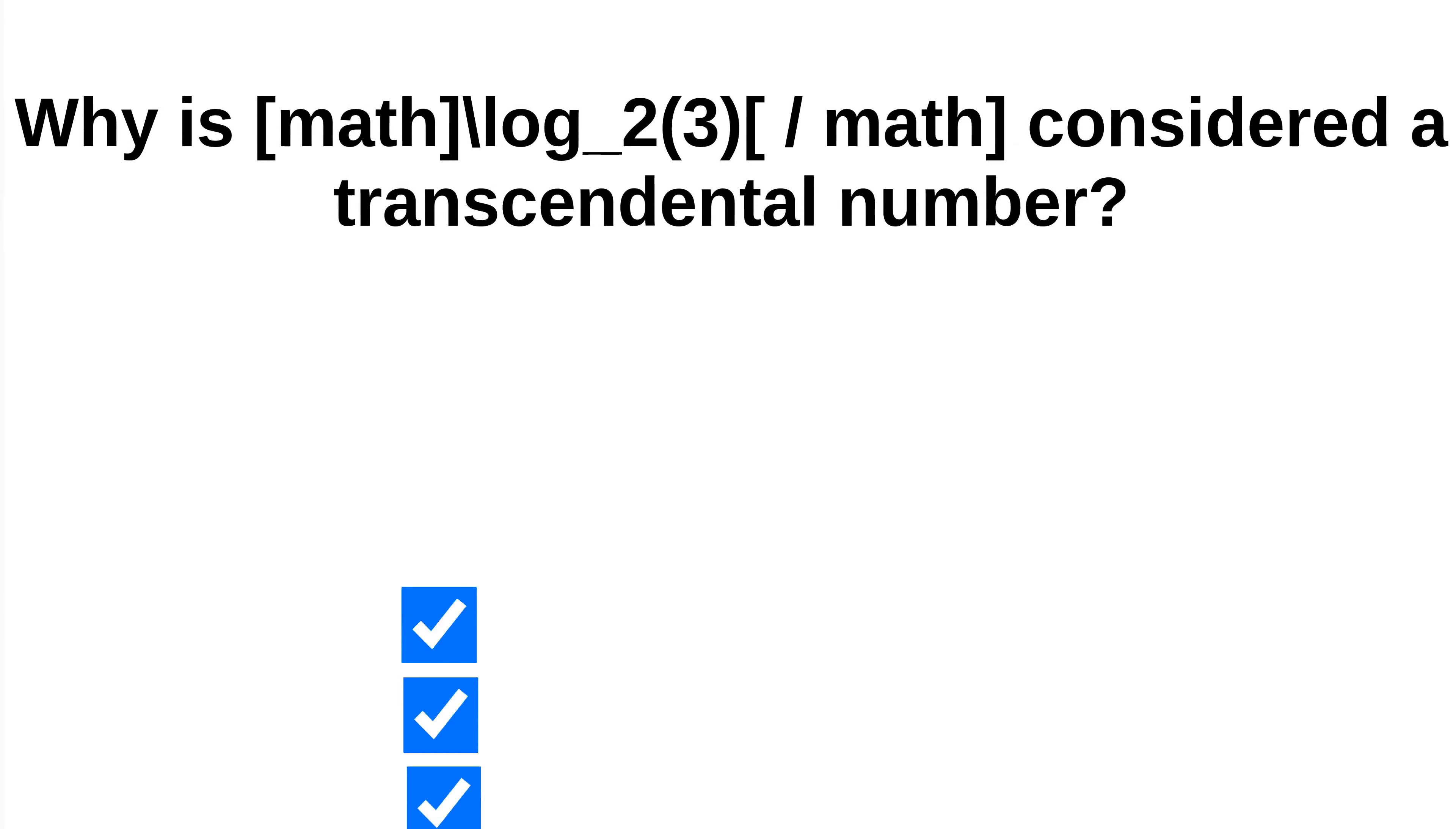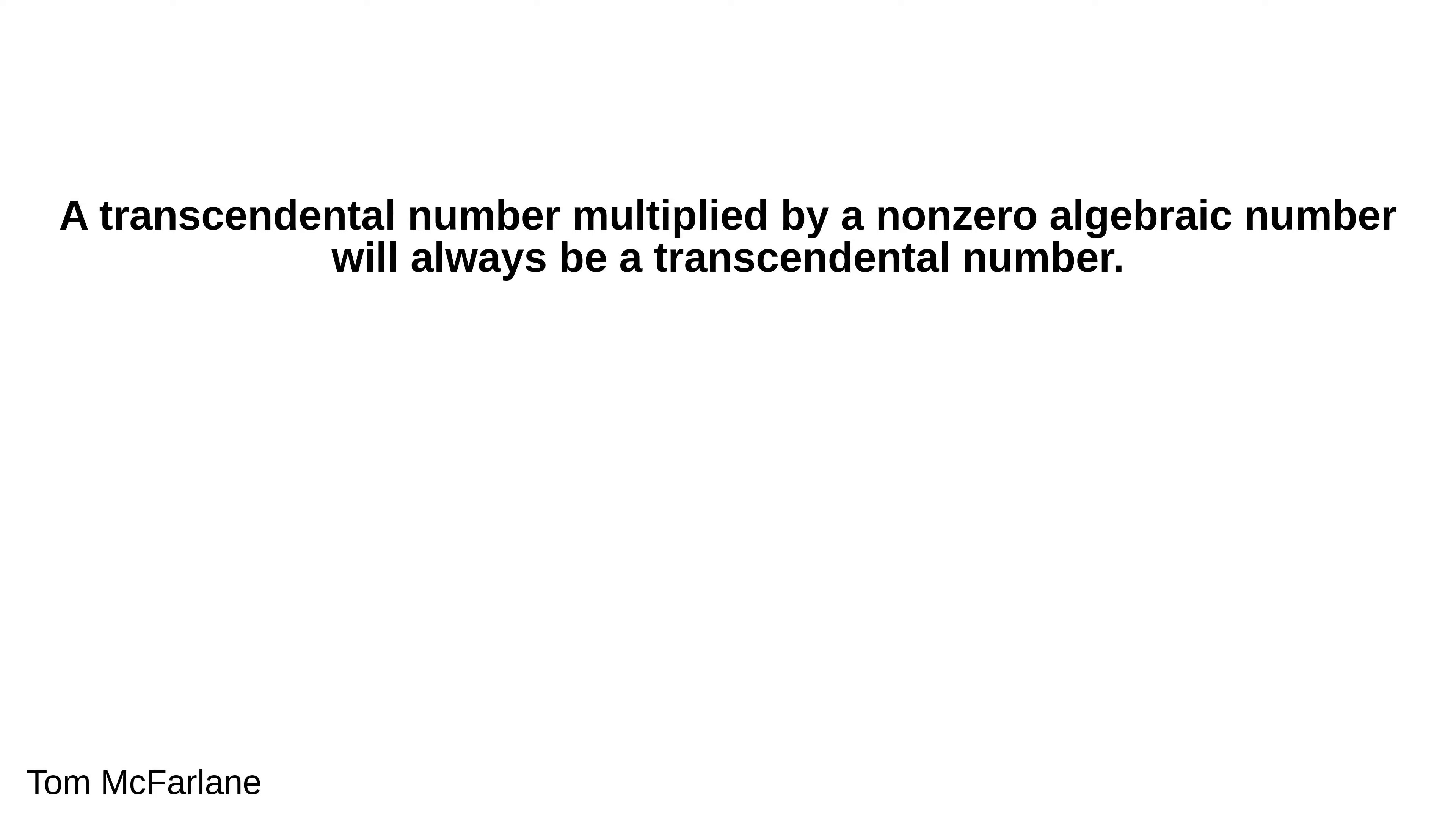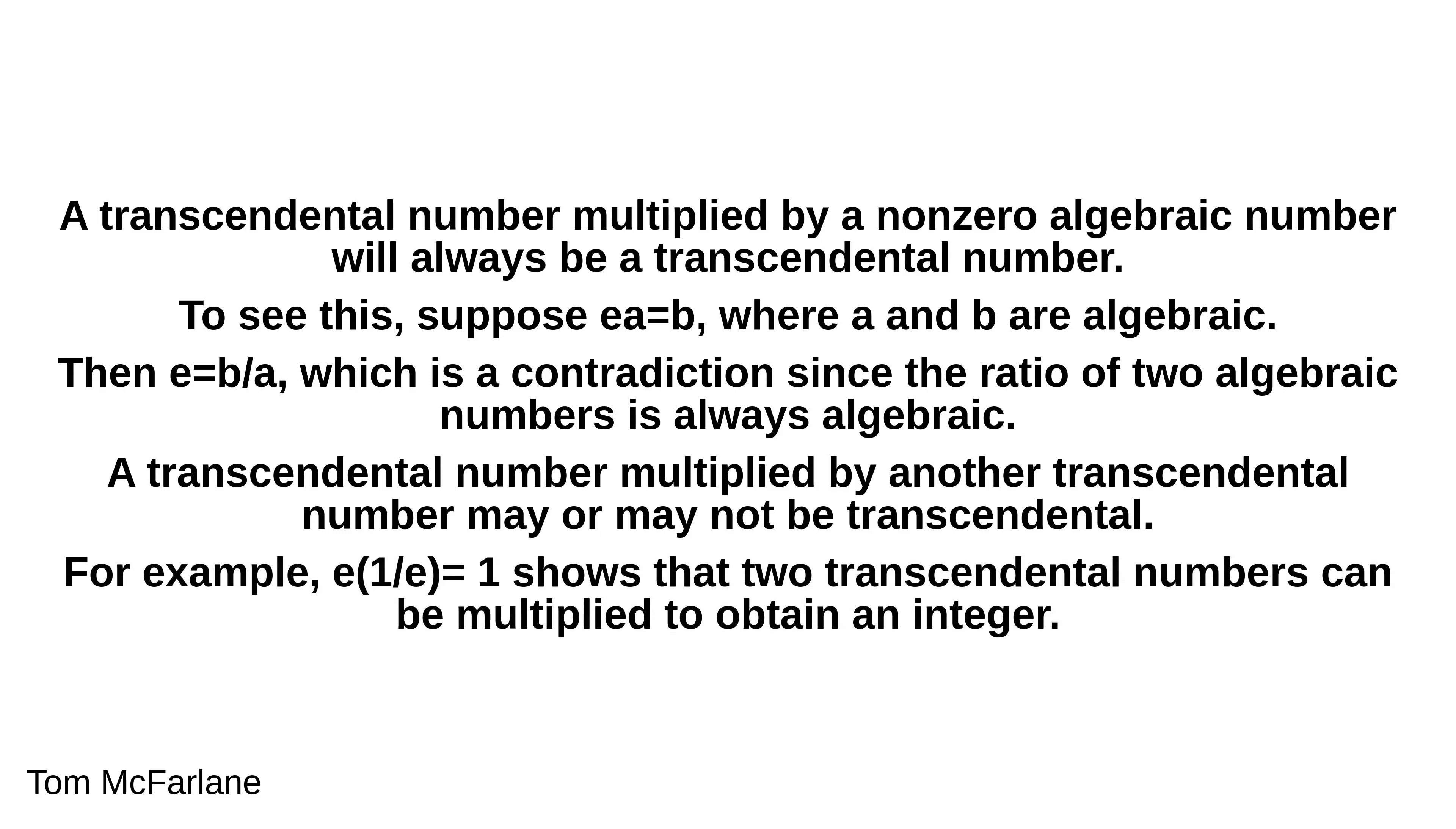We will continue with Tom McFarlane's answer. A transcendental number multiplied by a non-zero algebraic number will always be a transcendental number. To see this, suppose e times a equals b, where a and b are algebraic. Then e equals b over a, which is a contradiction since the ratio of two algebraic numbers is always algebraic. A transcendental number multiplied by another transcendental number may or may not be transcendental. For example, e times 1 over e equals 1 shows that two transcendental numbers can be multiplied to obtain an integer.